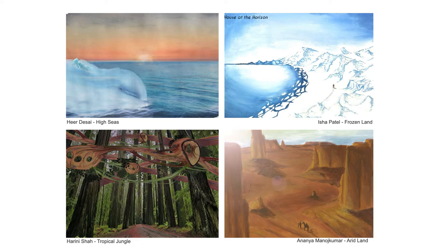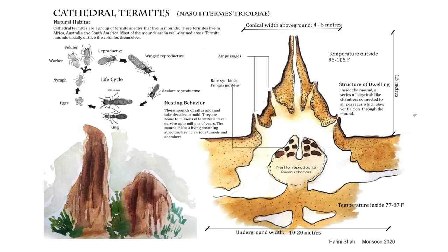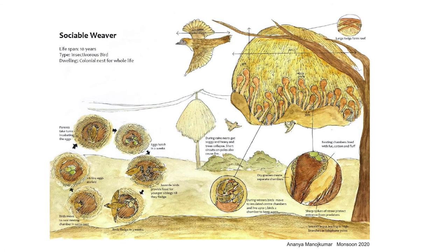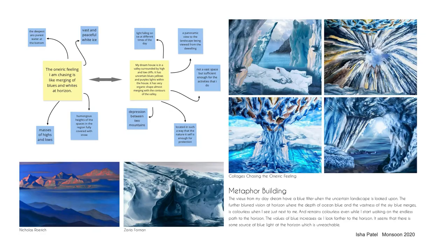Students were divided into four topographical contexts: frozen winterlands, arid desert lands, tropical jungles, and high seas. By studying the ways in which animals make their dwellings, responding to the climate and topography of a particular region, students were asked to make group presentations of different kinds of animals living in their assigned topographical context. Instead of doing case studies of existing architectural spaces, we directed them towards the building process of animals, intentionally keeping them away from materials and techniques used in building construction today. By looking at animals responding to a particular climate, they could adopt similar strategies when imagining their own dwellings.